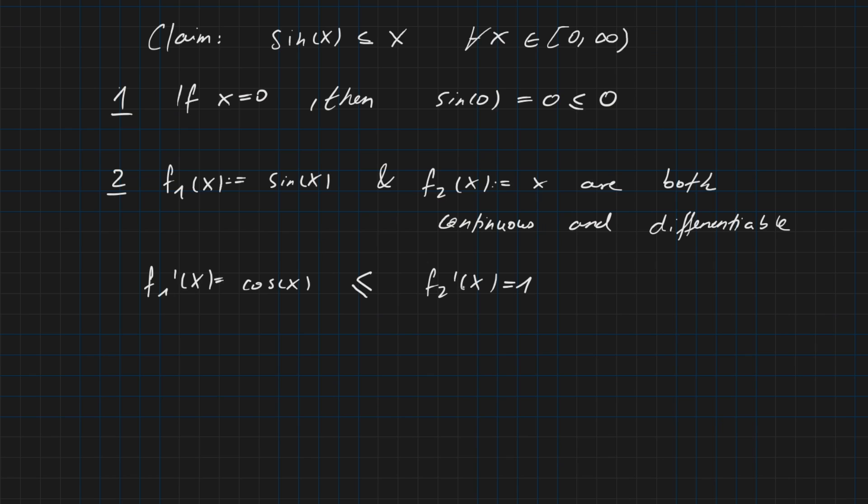Remember, the first derivative tells us how fast functions are increasing. Since the first derivative of f₁ is always smaller or equal to the first derivative of f₂, this means that f₂ is growing faster than f₁ for all x where this inequality holds. And this inequality holds always, so f₂ is always increasing faster than f₁.